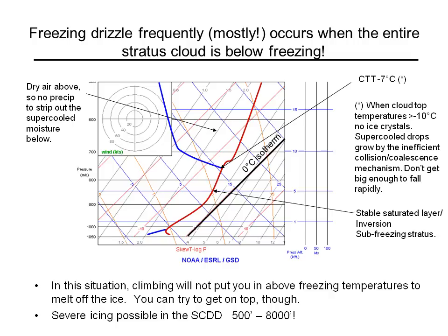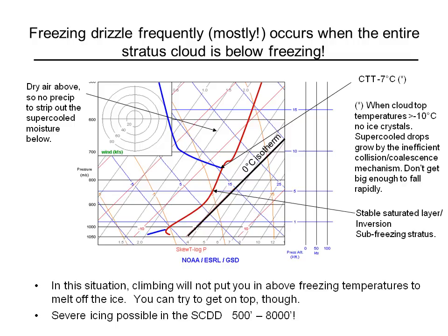This is a counter-example to the often heard rule of thumb that if you encounter freezing precipitation, then climbing will put you in warmer air and melt it off. In this case, the temperature never goes above freezing as you climb — you could get up into the dry air, but it would never be above freezing. One last point: we should check that at high altitudes the temperature and dew point don't come back together again, because if they did, precipitation from that high cold layer could fall down as snow into the supercooled clouds below and strip out the supercooled moisture. Here, the air is completely dry above the cloud tops, so that's not the case.